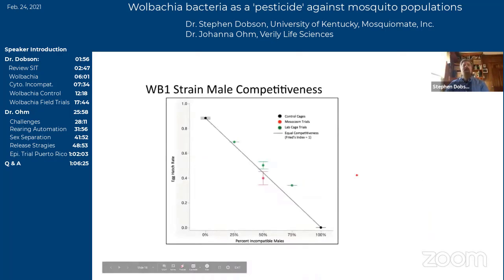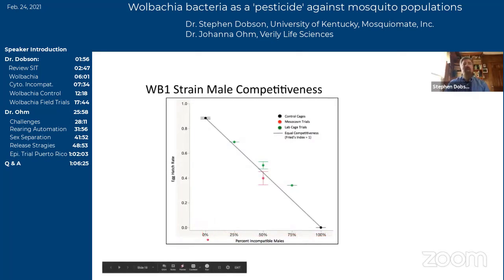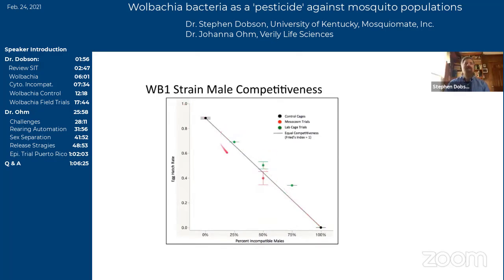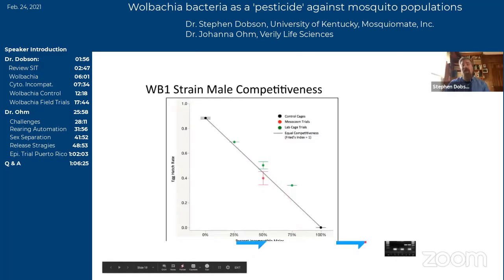Remember the importance of these males being competitive. Is it possible that all this handling and shipping — who knows what the temperature is along the way — makes the males less competitive by the time they get to California? Here's a picture of them being released in the field. We spent a lot of time examining the shipped males on the receiving end, looking at things like this cage assay — looking at male competitiveness. We're varying the ratio of incompatible males, going from 0% to 100% incompatible males, and measuring the egg hatch rate. This line is what one would expect if they are equally competitive.